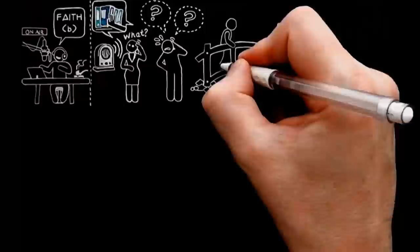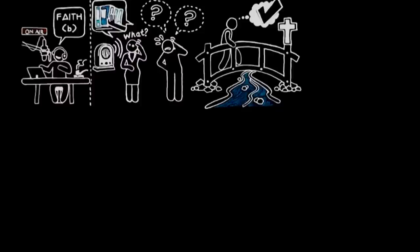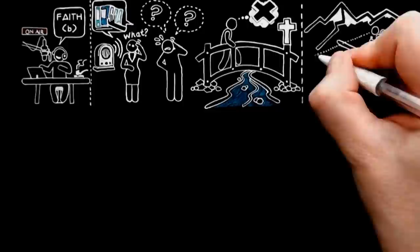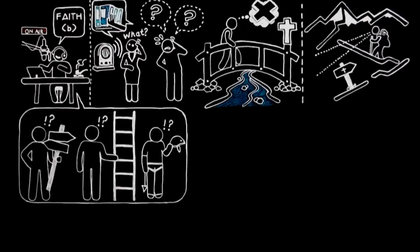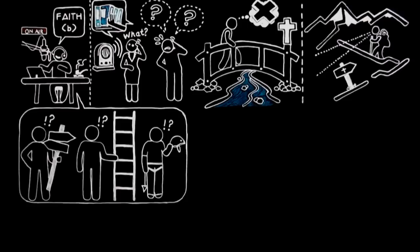There are certain things in Christianity that can be understood from the outside before you have become a Christian, but there are a great many things that cannot be understood until after you have gone a certain distance along the Christian road. These things are purely practical, though they do not look as if they were. They are directions for dealing with particular crossroads and obstacles on the journey, and they do not make sense until a man has reached those places.